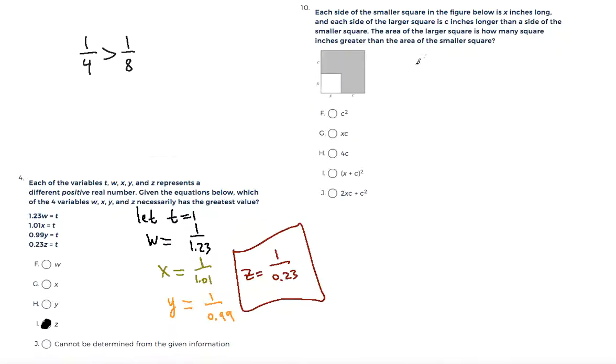So first we have to know that the area of the smaller square is x times x, which equals x squared. Because this is a square, it's really easy, it's just x squared.